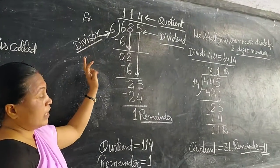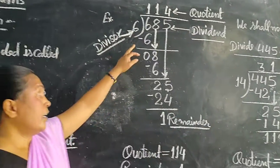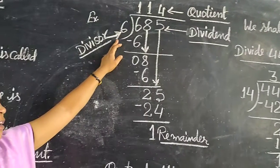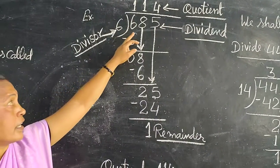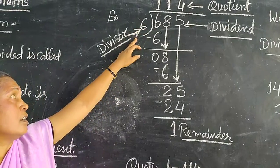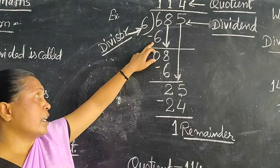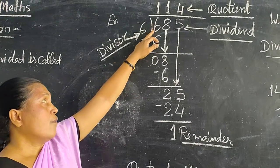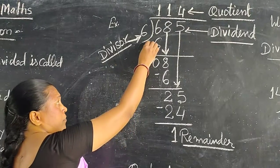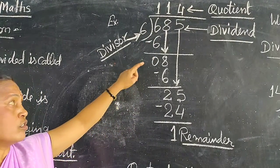Find the quotient and remainder. Eight hundred sixty-five divided by six. We divide six hundred eighty-five by six. Six one is six. We divide six. Six minus six equals zero.